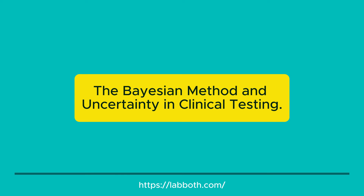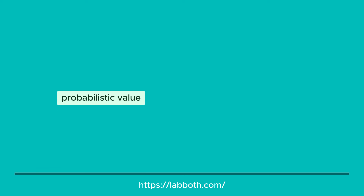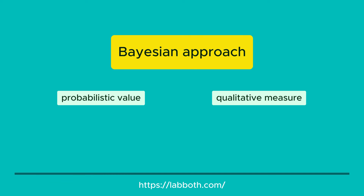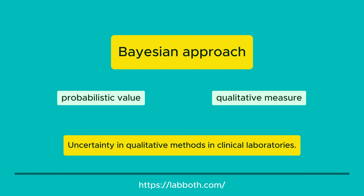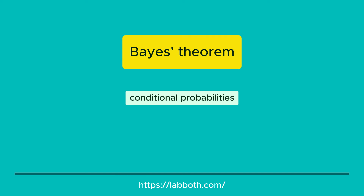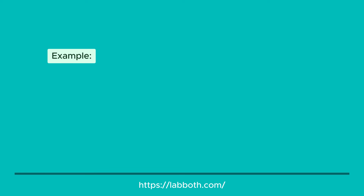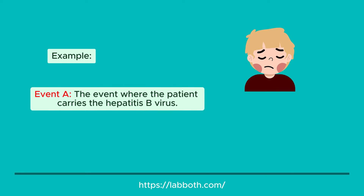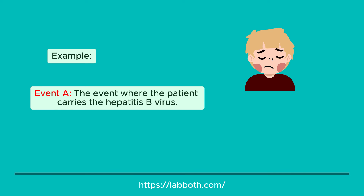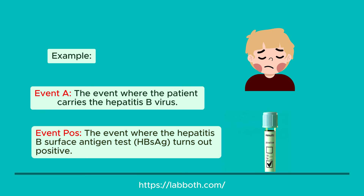The Bayesian method and uncertainty in clinical testing. To associate a probabilistic value with a qualitative measure, we can use the Bayesian approach — one of the oldest known methods for estimating uncertainty in qualitative clinical laboratory methods. Bayes' theorem is a concept related to conditional probabilities, where the probability of an event occurring is estimated given that an alternative event has already occurred. For example: Event A — the patient carries the hepatitis B virus; Event POS — the hepatitis B surface antigen test (HBsAg) turns out positive. Using the Bayesian approach, we estimate the probability that the patient is sick given that the test result was positive, using a conditional probability equation.